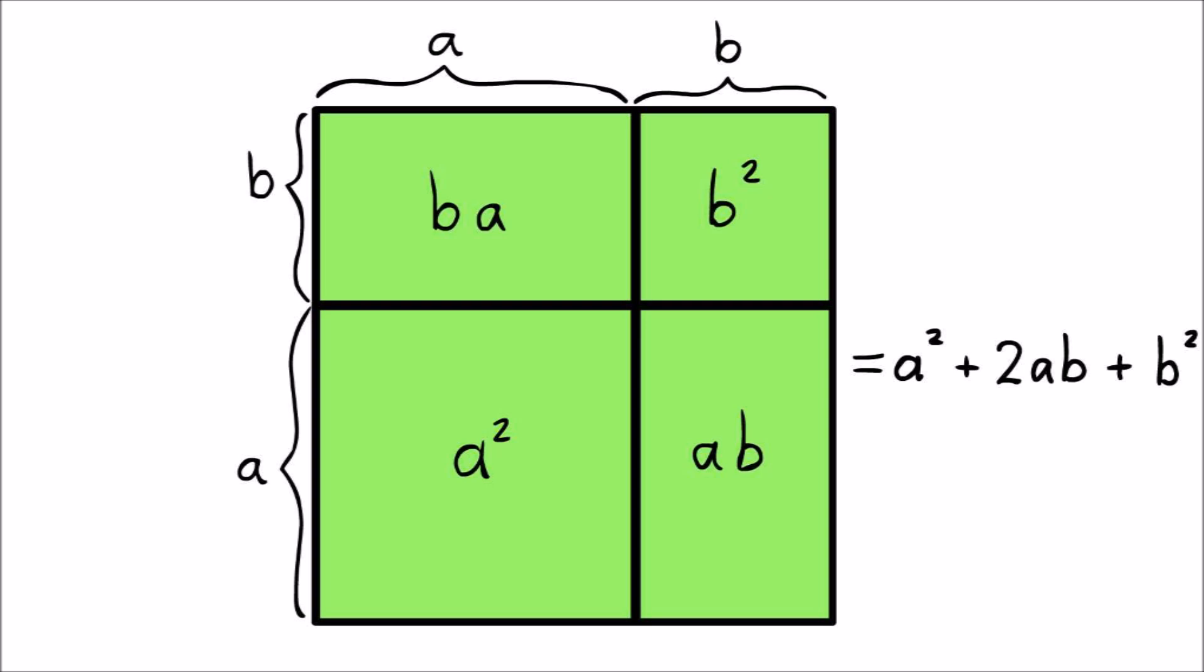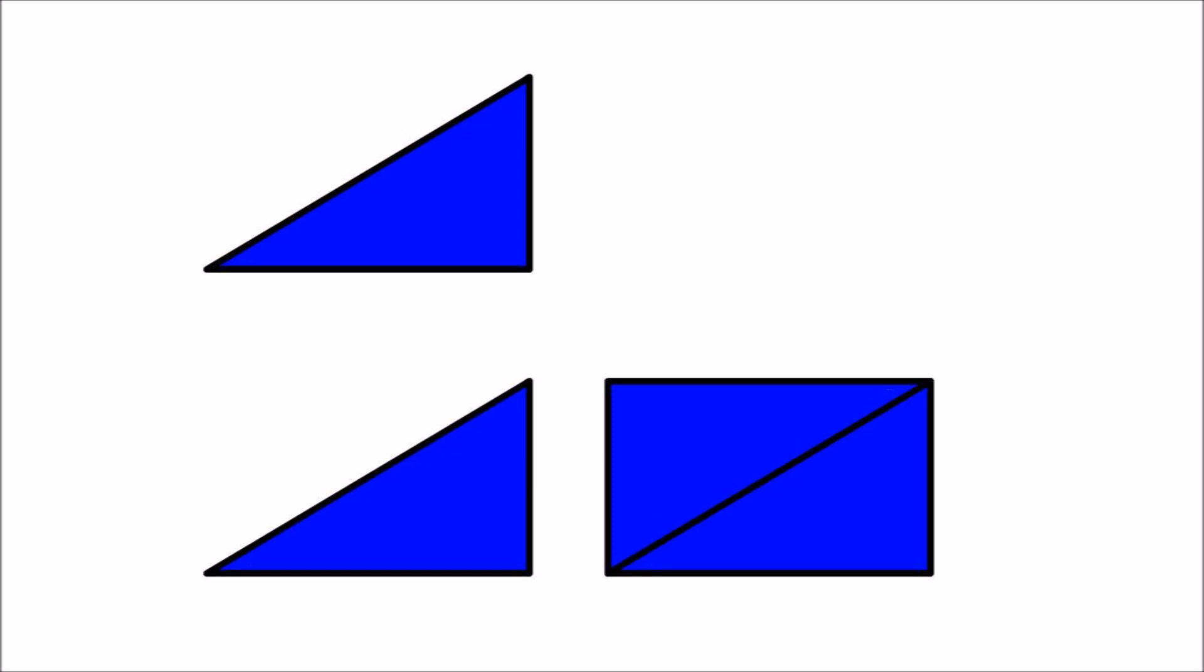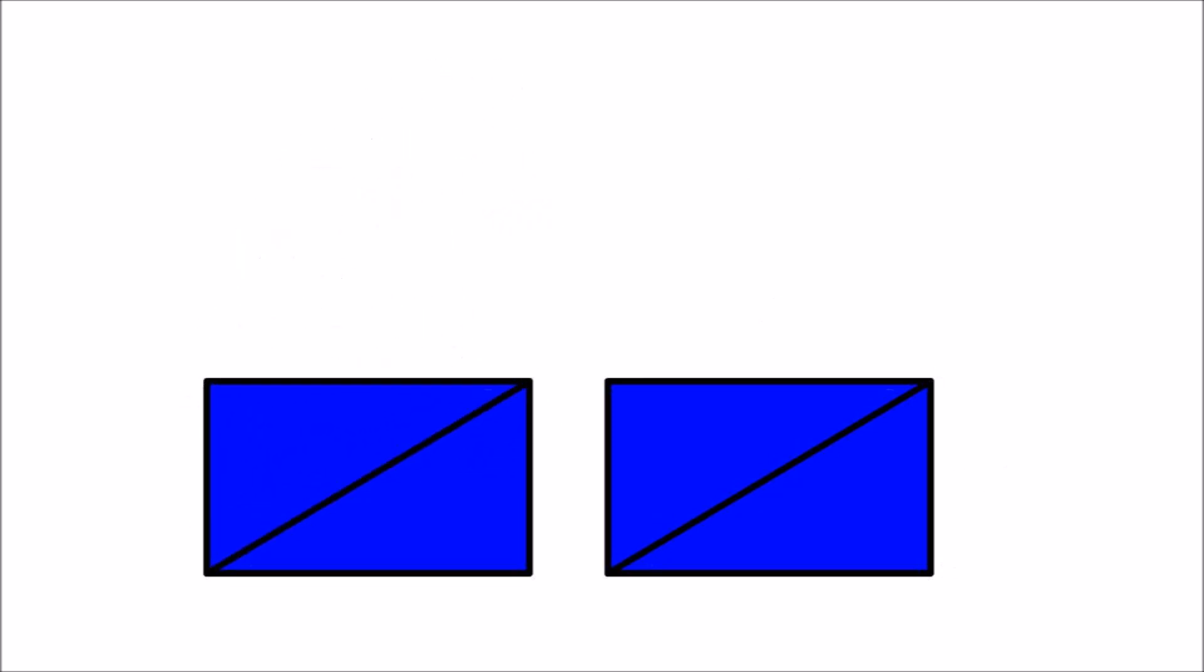What about the area of the four triangles? Well, here's a sneaky trick you can do with the right triangles. If you fit two copies together, you can get a rectangle with area A times B or AB. In this case, we have four triangles, so we can make two rectangles with a total area of 2AB.